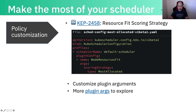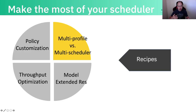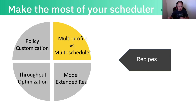This is the example of adjusting your scheduling behavior by modifying the default or modifying the plugin arguments. I put a link for you to get familiar with all the plugins, their arguments, and their semantics. That's the first recipe: customize your scheduling behavior by modifying the default scheduler config, like changing the plugin weight and changing the plugin arguments.